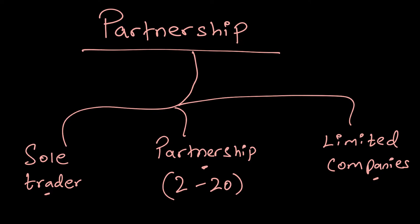When there is a sole trader, they take all the profits as drawings. When there is a limited company, the board of directors pays out dividends. But what about a partnership? There are partners running the business, so how do they decide how to keep the profits — who gets what, how much can you withdraw? All of this has to be decided when you form a partnership.